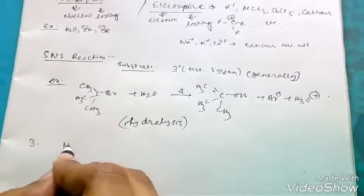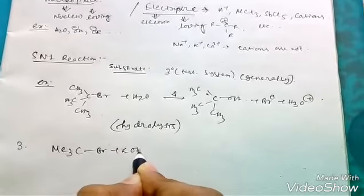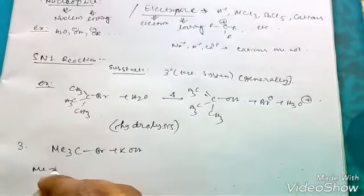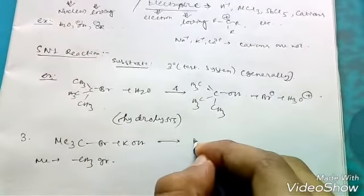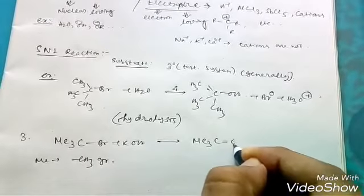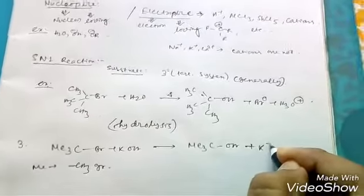Another example: Me3CBr plus KOH. Here Me is CH3 group. KOH, no heat applied - you can apply heat, but you don't need to. You get K+ plus the product. So these are the examples.